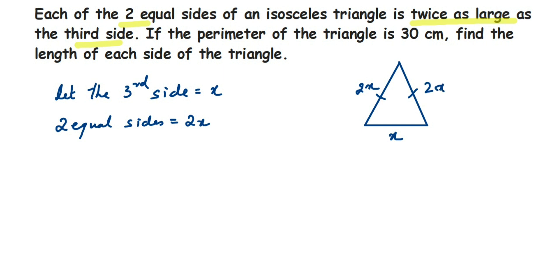So this will be 2x and this will also be 2x. And what else is given? We have given the perimeter is 30 cm. Now we know that perimeter is nothing but the length of the whole boundary. That means we have to add all the sides of the triangle and that is perimeter, which is given as 30.